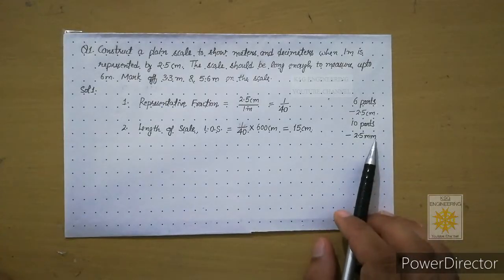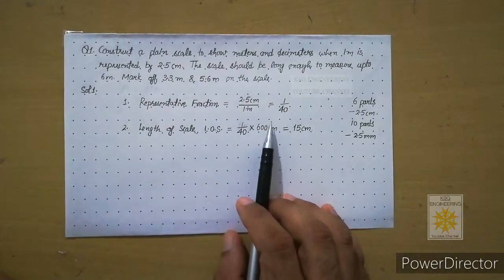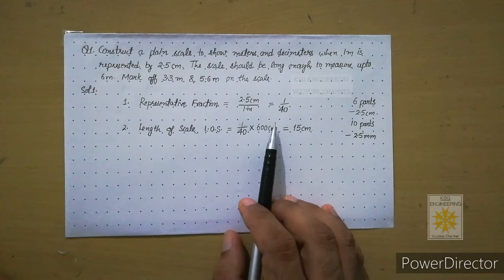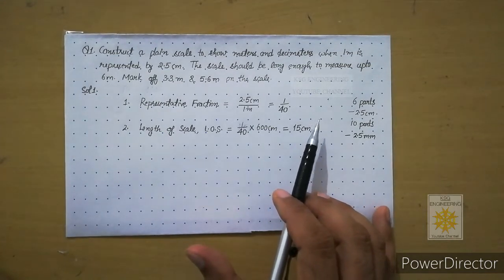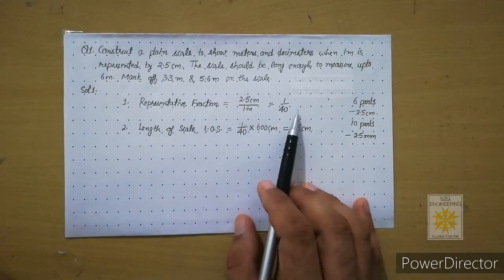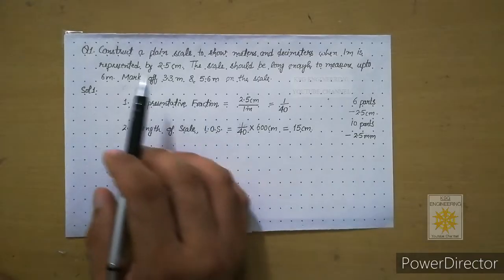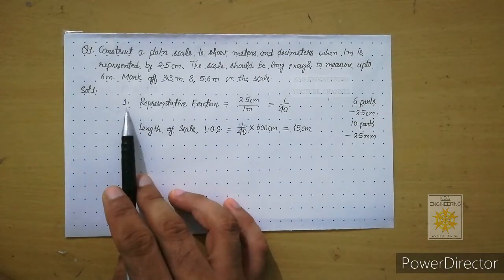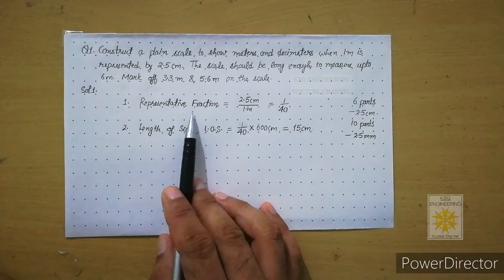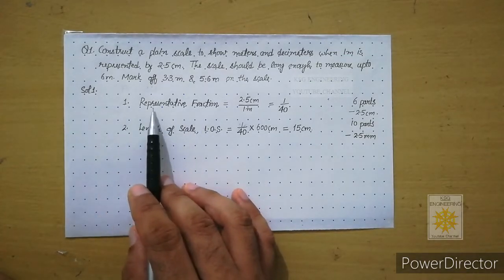I will not discuss the solution now because we have already discussed it in the previous lecture. In this lecture I will only tell you how to present your work on the grid sheet and how to draw the plane scale on the grid sheet. First of all, you have to write the representative factor or representative fraction — put serial number one.